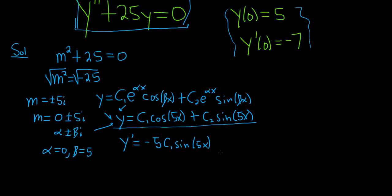Same thing here: the derivative of sine is cosine, and we get 5 from the chain rule. So plus 5c₂cos(5x).